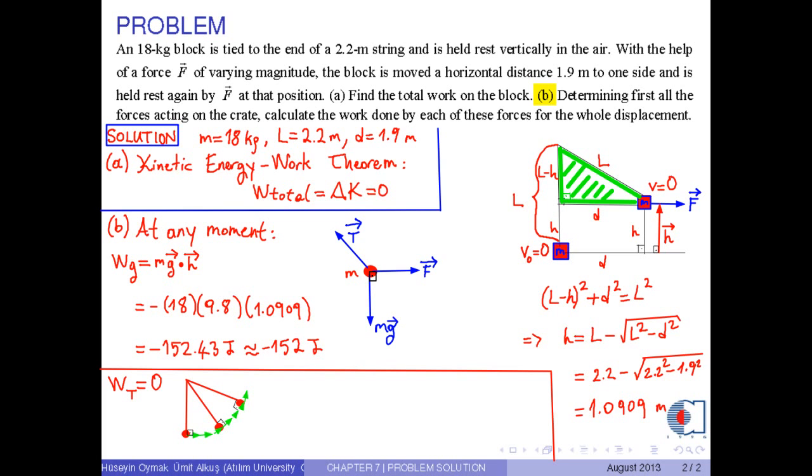From part A, we know that total work is zero. Then we write total work equals WG plus WT plus WF, which is equal to zero from part A. From this, we can find an expression for WF as negative WG. Since we know WG, then we obtain WF as 152 joules.